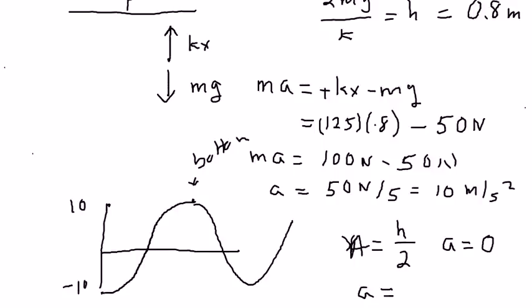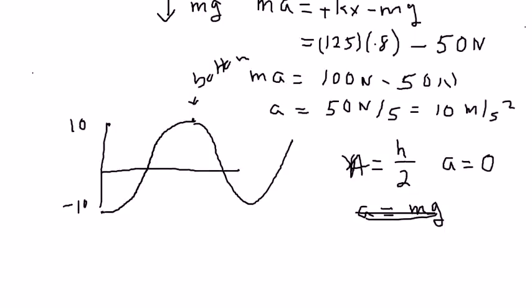The idea there is I want to look and figure out where the acceleration is equal to zero. The acceleration is equal to zero when mg is equal to kx and that corresponds to an x of 0.4 meters.